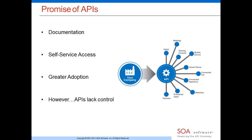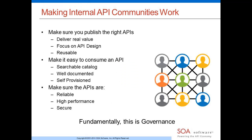We have a lot of questions coming in. We'll open it up for Q&A towards the end — please type your question in the chat window. Coming back to best practices: when enterprises roll out internal API programs, what are some of the best practices they should undertake?